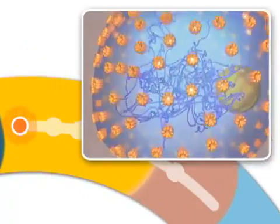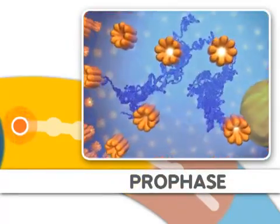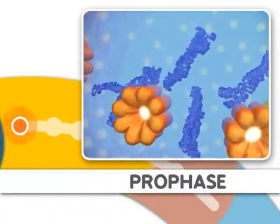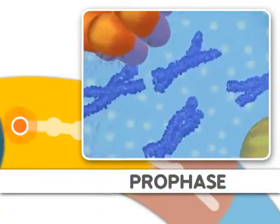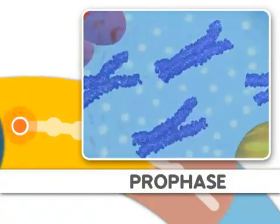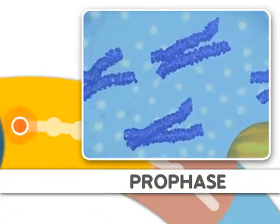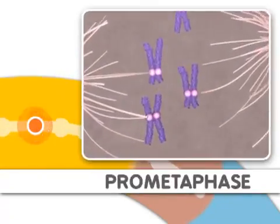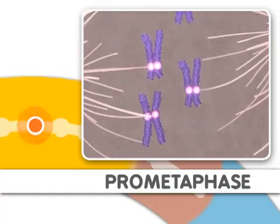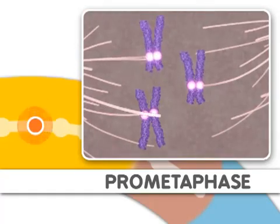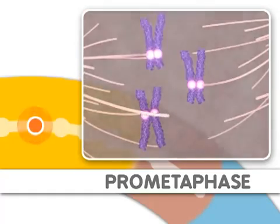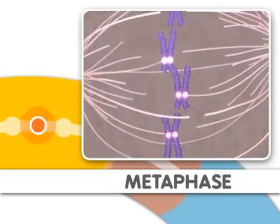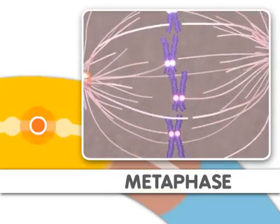The first stage is prophase, where the DNA condenses, organizes, and the classic chromosome structure appears. Next comes prometaphase, where microtubules attach to the chromosomes. This step is followed by metaphase, where the chromosomes align.